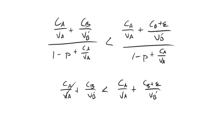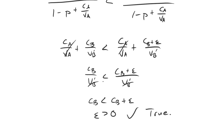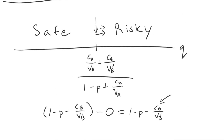The CA over VA terms cancel out, leaving CB over VB prime less than CB plus epsilon over VB prime. Since the denominators are the same and VB prime is positive, we can eliminate the fraction, leaving CB less than CB plus epsilon — which reduces to epsilon greater than zero, which is true. We have verified that as we increase CB by epsilon, it shifts the cut point to the right, and A is making the safer demand under a greater set of circumstances.